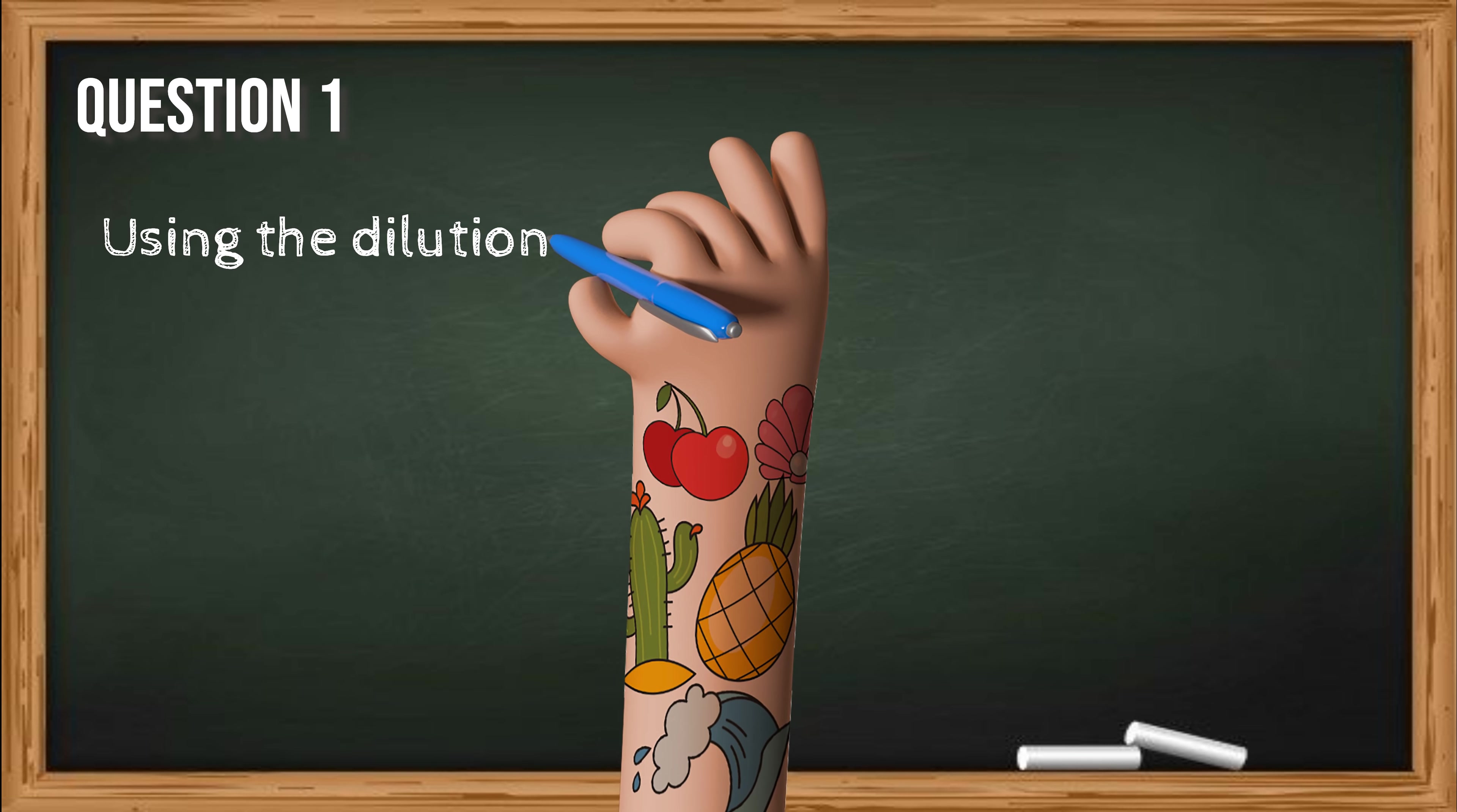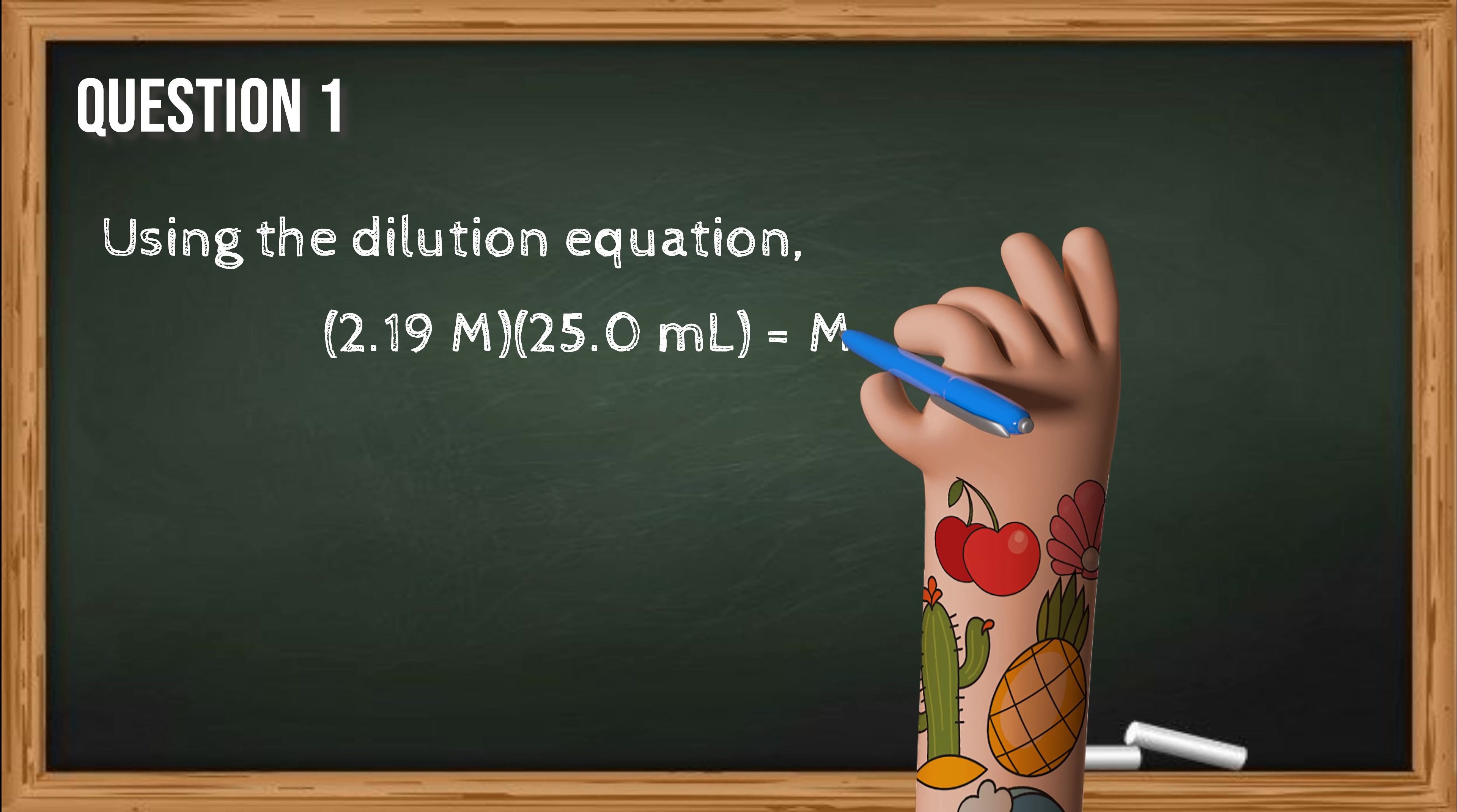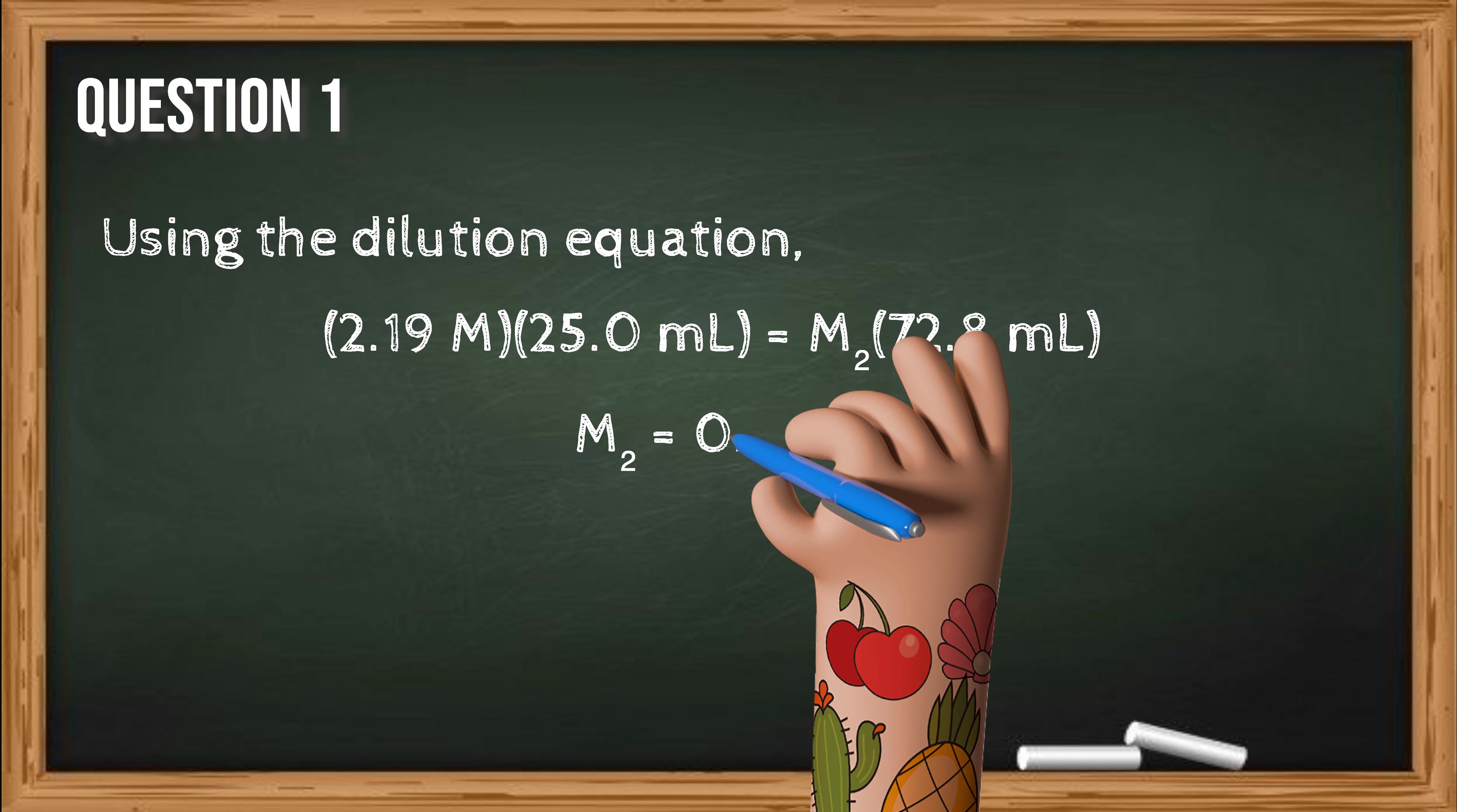Using the dilution equation, we have the following. 2.19 molar times 25 milliliters is equal to M2 times 72.8 milliliters. Now solving for M2, we get 0.752 molar.